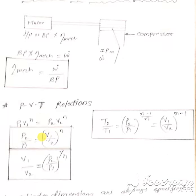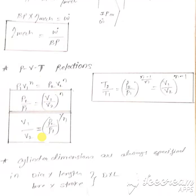Now, PVT relations for polytropic process: P1 V1 to the power N equals P2 V2 to the power N. Therefore, P2 by P1 equals V1 by V2 to the power N, or V1 by V2 equals P2 by P1 to the power 1 upon N.